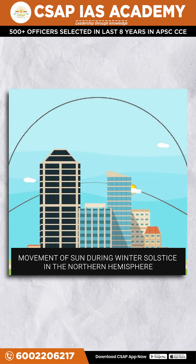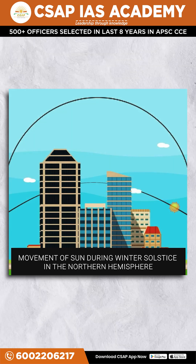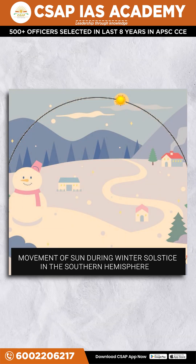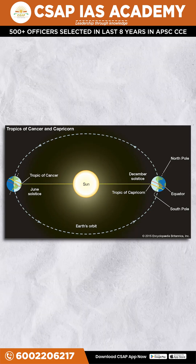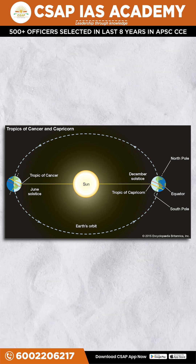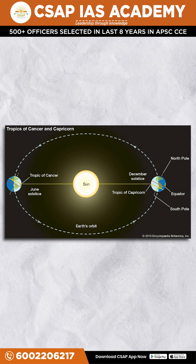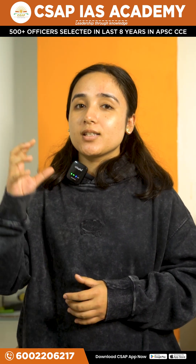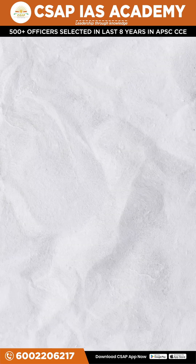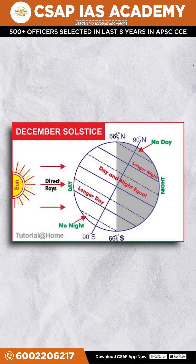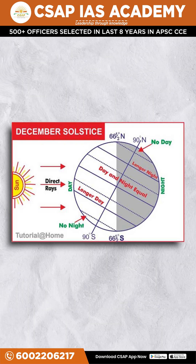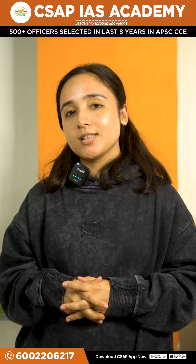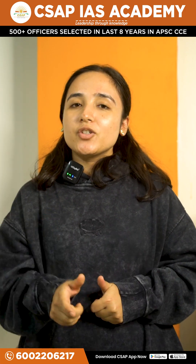On this day, December 21st, the northern hemisphere is tilted away from the sun whereas the southern hemisphere is tilted towards the sun. Because of this phenomenon, the rays of the sun fall directly on the Tropic of Capricorn and not on the Tropic of Cancer — and therefore it is called the winter solstice.